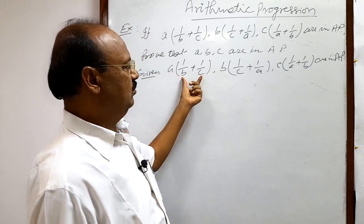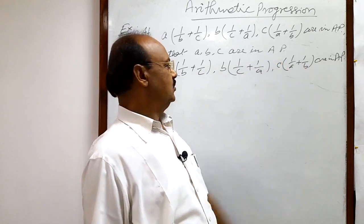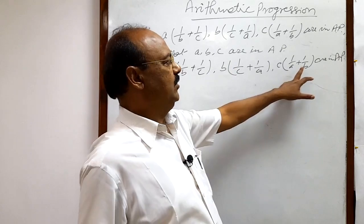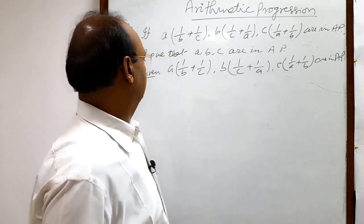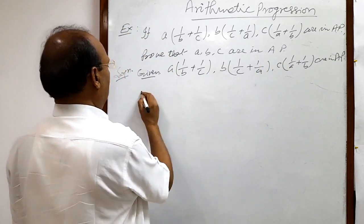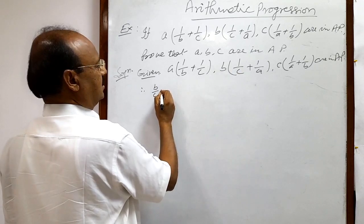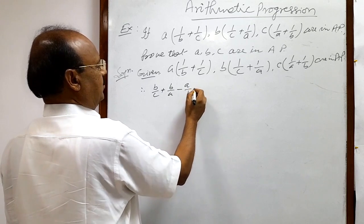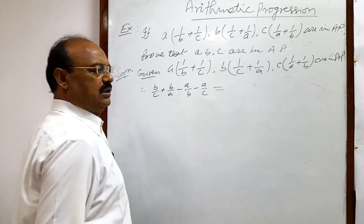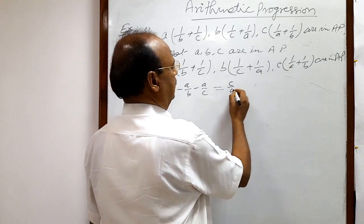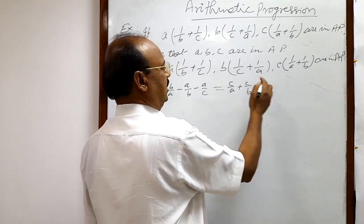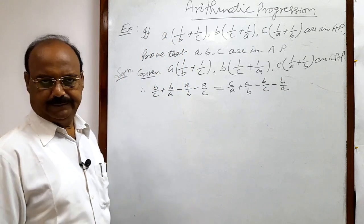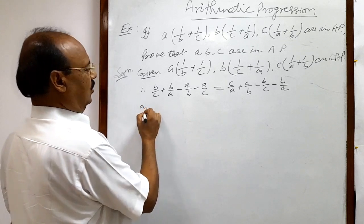We multiply a with its two terms, b with its two terms, and c with its two terms. Applying the common difference property: the second number minus the first number equals the third number minus the second number. So b/c + b/a minus a/b minus a/c equals c/a + c/b minus b/c minus b/a.